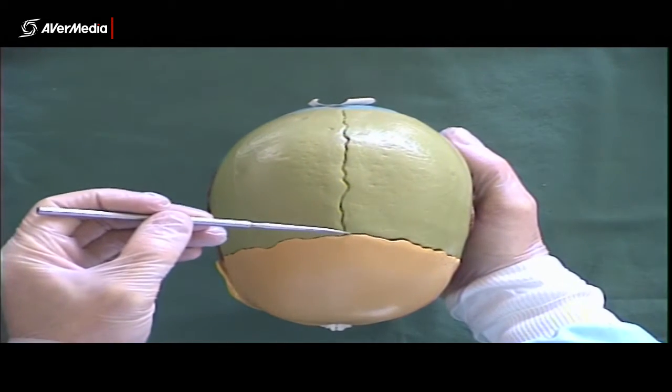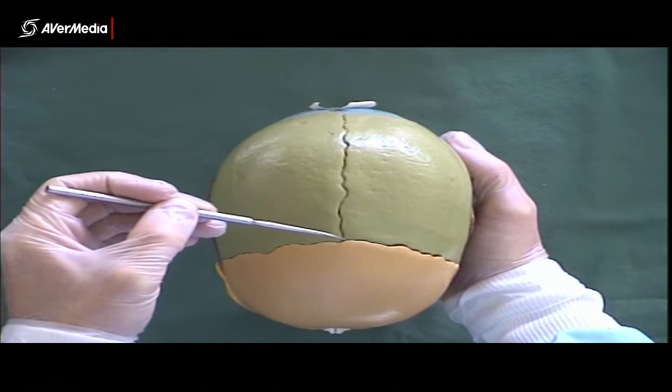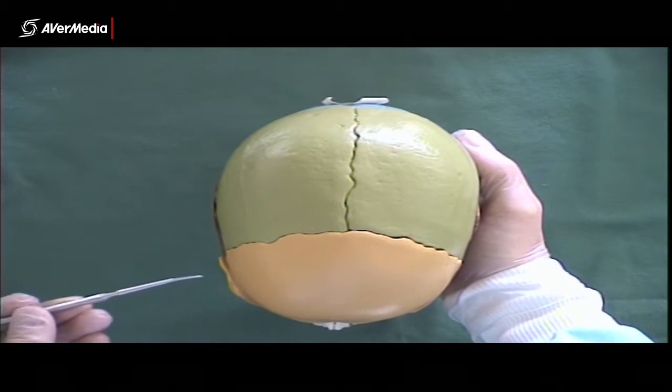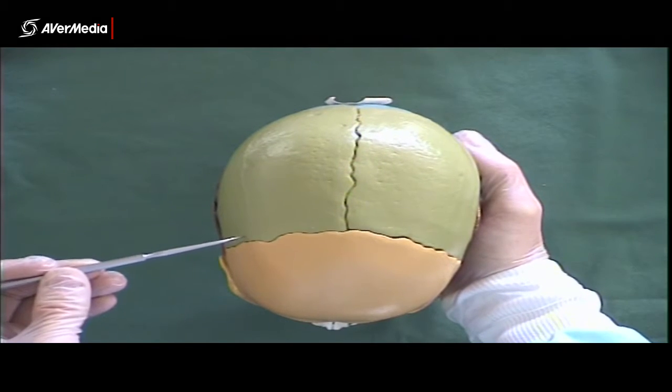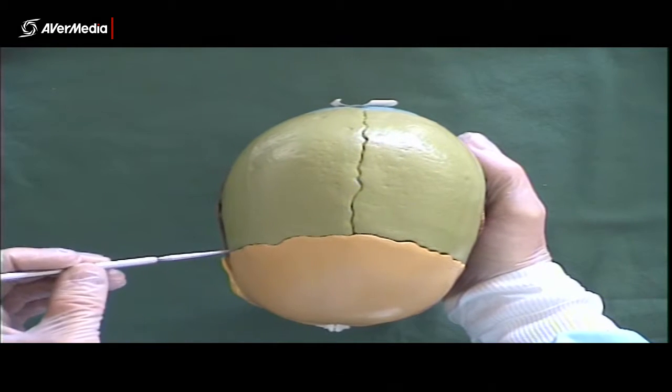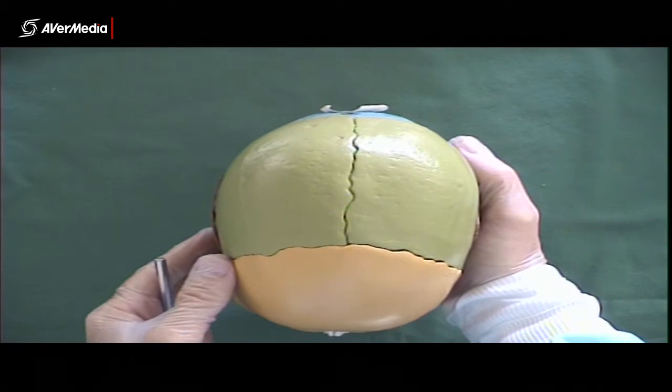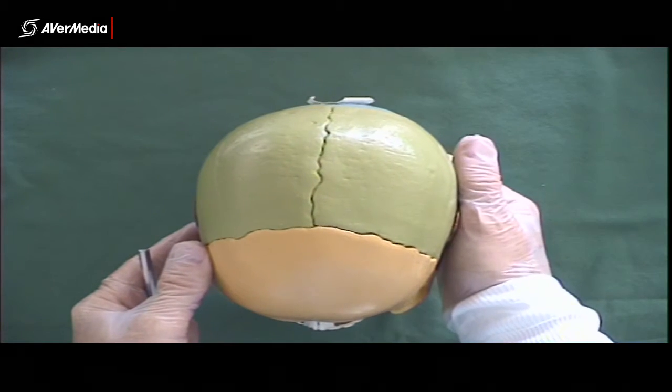Between the two parietal bones, we have a sagittal suture. Between the frontal and parietal bones, we have a coronal suture. That would be in a coronal plane. Of course, the sagittal suture is in the mid-sagittal or median plane.